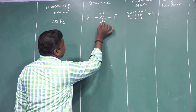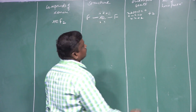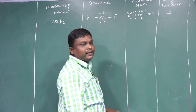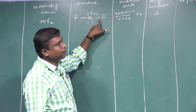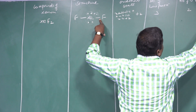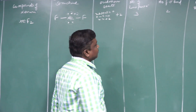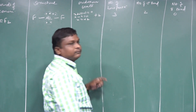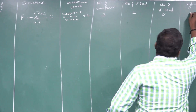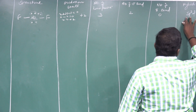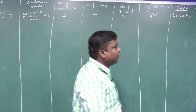For XeF2: number of lone pairs of electrons = 3. Number of sigma bonds = 2. Number of pi bonds = 0 (no double bond). Hybridization = sp3d. Shape = linear.